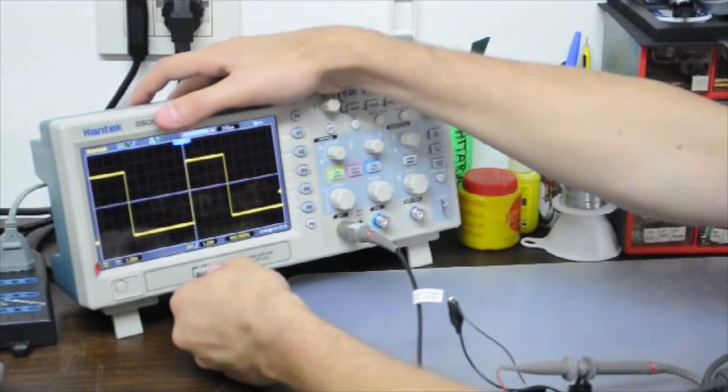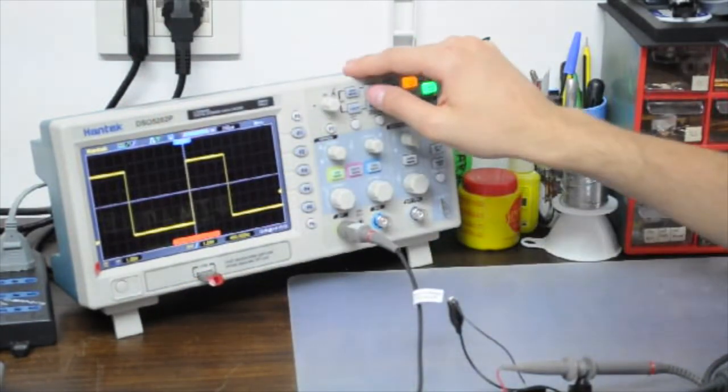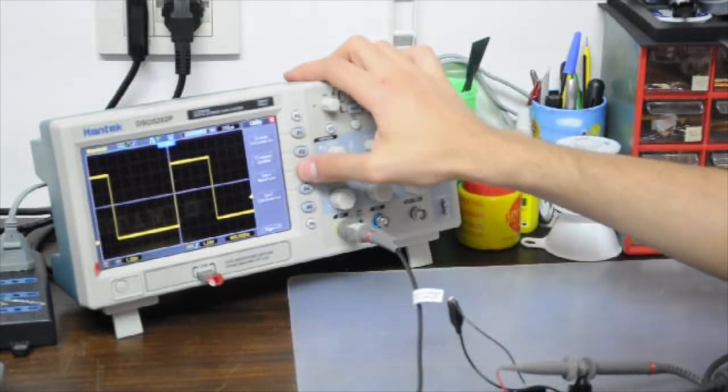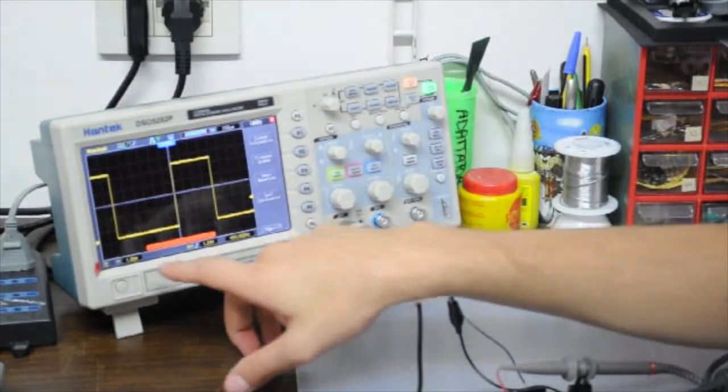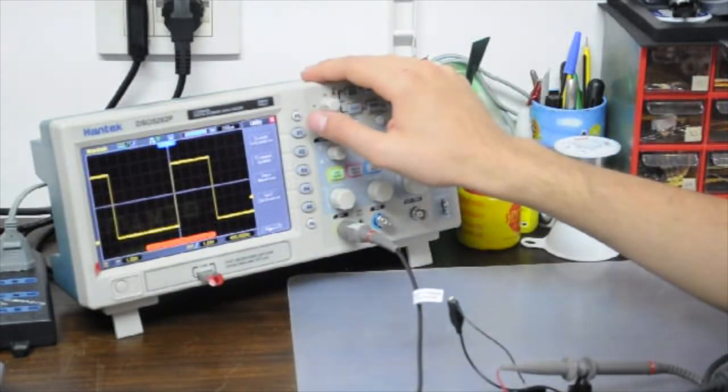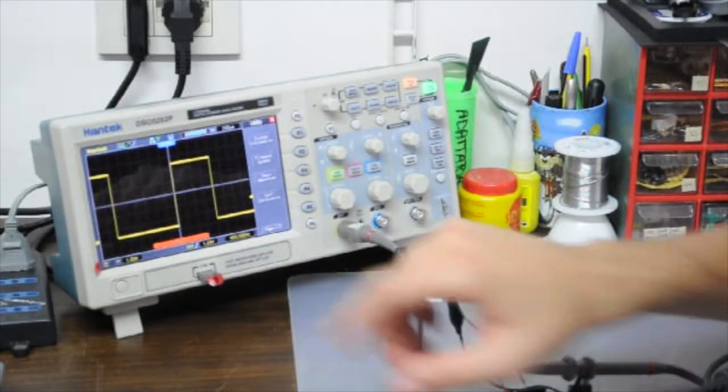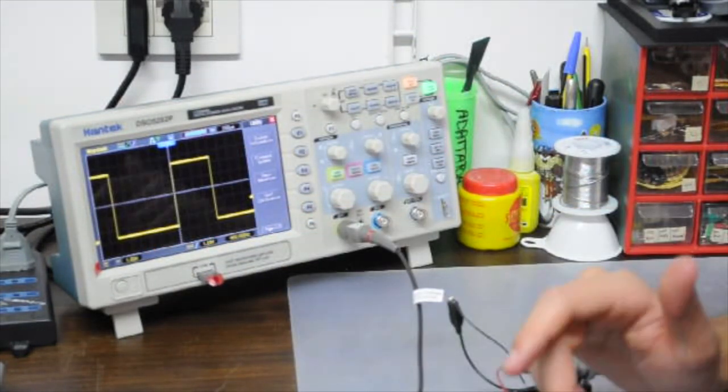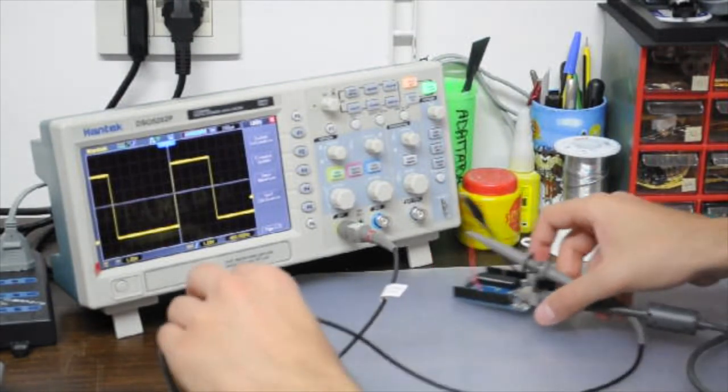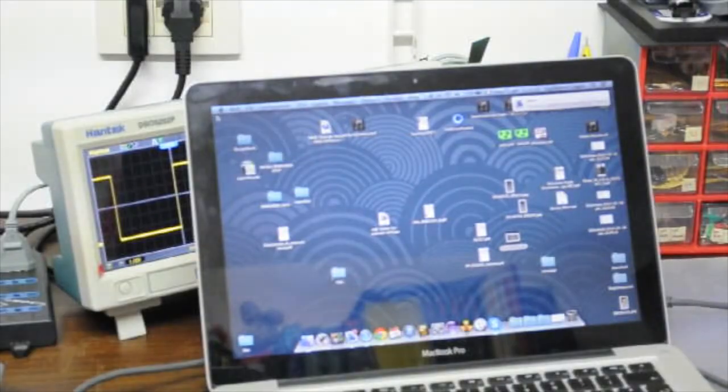Now I want to try to store this waveform and put this here to my USB. I put it in. USB device detected. And I just go to utility, save waveform, and saving to USB, please wait. Saving is successful. So let's go and see if we can read this waveform in our PC.